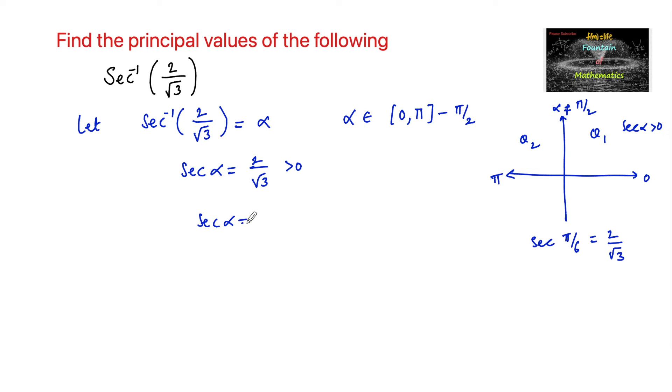We can write secant alpha is equal to secant π by 6. Therefore, alpha is equal to π by 6, which belongs to the principal range, that is 0 to π minus π by 2.